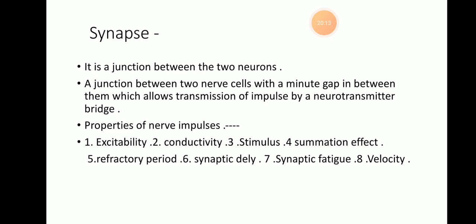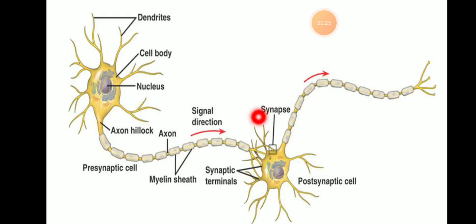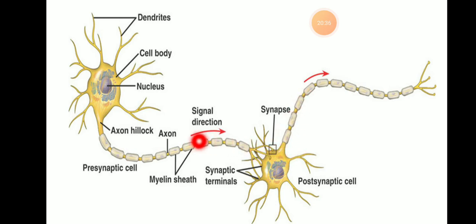The synapse is between neurons — one neuron has a dendron and another neuron has a dendron. The axon part of one neuron and the dendron of another neuron have a gap between them. This gap between the axon and the dendron is the synapse.